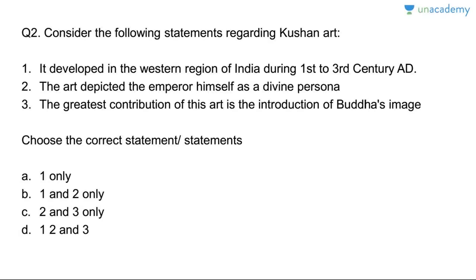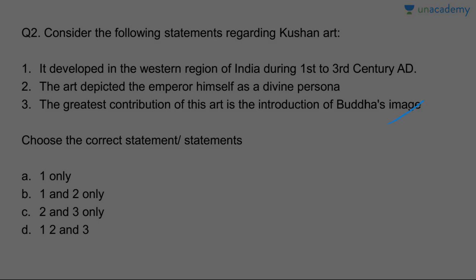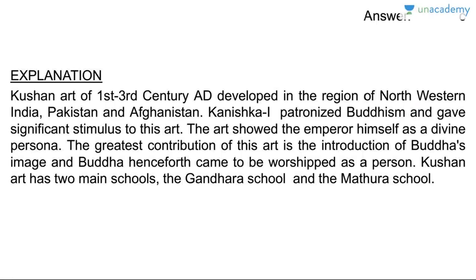Question two: consider the following statements regarding Kushan art. First, it developed in the western region during the first to third century AD. Second, the art depicted the emperor himself as a divine persona. Third, the greatest contribution of this art is the introduction of Buddha's image. Answer is C, that is two and three.